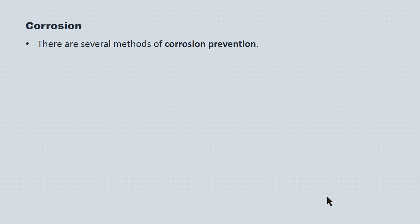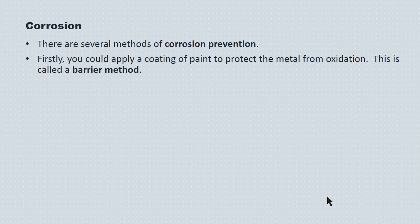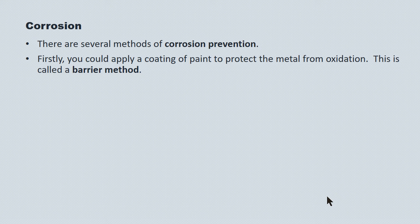There are several methods of corrosion protection. The first and perhaps simplest is the barrier method — you apply a coating of paint to the metal to protect it from being oxidized, preventing the environment from having access to the metal.